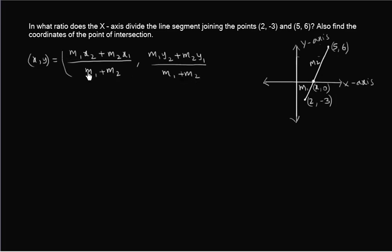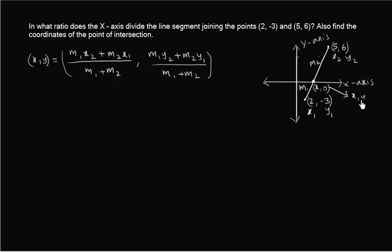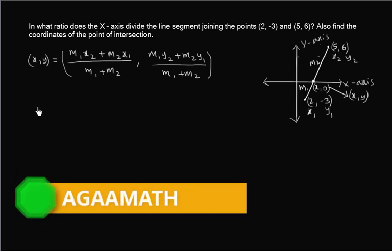These are the points: I take 2 comma minus 3 as x1 y1, and 5 comma 6 as x2 y2. The point x comma 0 is nothing but x comma y. So let us substitute the values in their respective places.